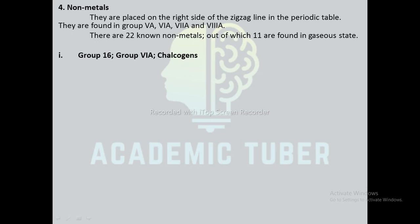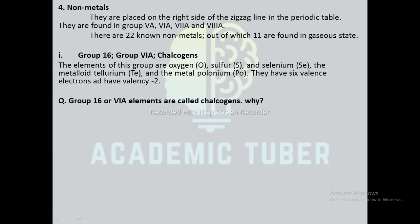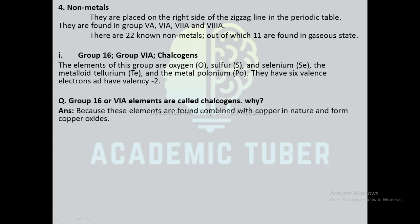Group 16 or chalcogens (group 6A): the elements of this group are oxygen, sulfur, selenium, the metalloid tellurium, and the metal polonium. They have 6 valence electrons and have valence -2. Group 16 or 6A elements are called chalcogens because these elements are found combined with copper in nature and form copper oxides.